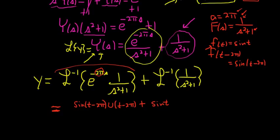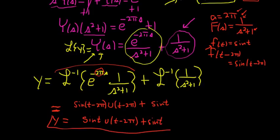You could use identities or like the trig identities. Or just think about it. The period of sine is 2π. So if you subtract 2π, nothing is really going to happen. This is just sine t unit step of t minus 2π plus sine t. And that there would be the solution to the differential equation. I hope that made sense.